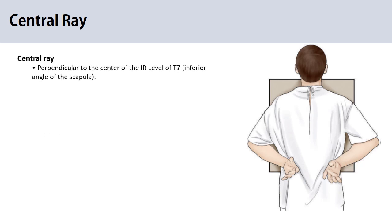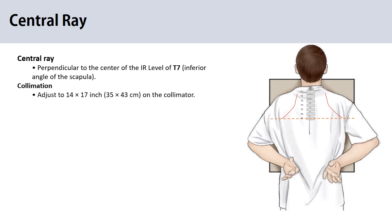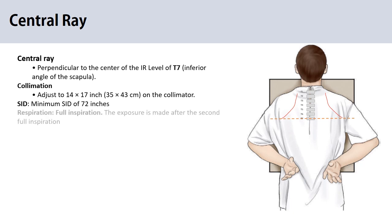The central ray should be perpendicular to the image receptor at the level of T7. You can find T7 by touching the inferior border of the scapula angle. Then adjust the collimation to IR size — careful collimation is important in chest x-ray, as opening the collimation widely simply increases patient dose and scatter radiation, which affects image quality. Since we are taking x-ray of a large area, you should use a minimum SID of 72 inches or 180 centimeters to decrease magnification of the heart and to record the details of the thoracic structures.